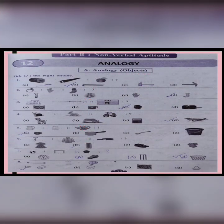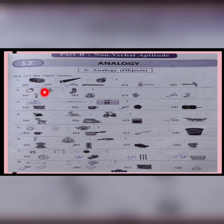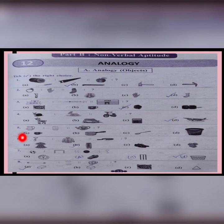First, let us start with chapter number 12 Analogy. Today I'll be giving you only the correct answers of the questions from all the chapters chosen for this midterm. In question A1, the correct option is B. Question A2, the correct option is D. Question A3, the correct option is C. Question A4, the correct option is D. Question A5, the first option is correct. Question A6, the second option is correct. Question A7, the last option is correct. Question A8, the first option is correct.